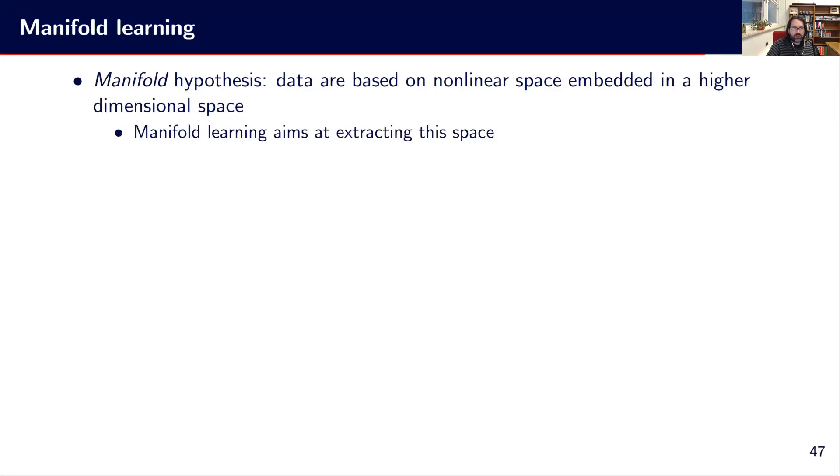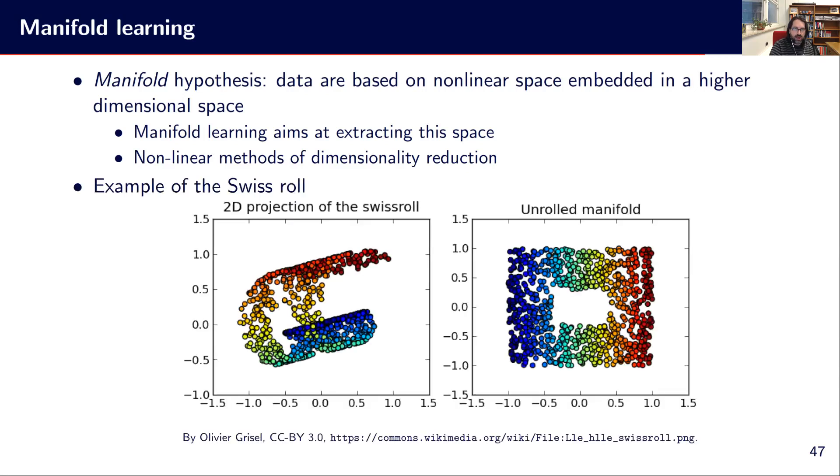So the manifold learning aims at extracting that lower dimensionality space to get the points. And it's considered as a non-linear method for dimensionality reduction. Compared to PCA, PCA is a linear method. So basically, it is making a linear transformation, a mapping from D dimensions to K dimensions using some simple linear transformation, while with manifold learning, we may use much more complex transformation or models to extract the manifold in that high dimensionality space.